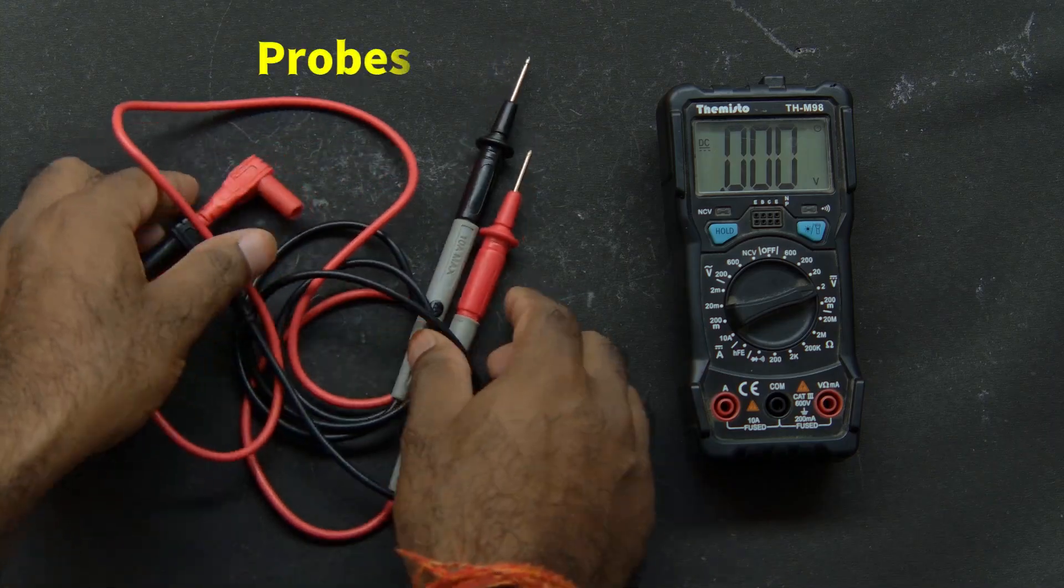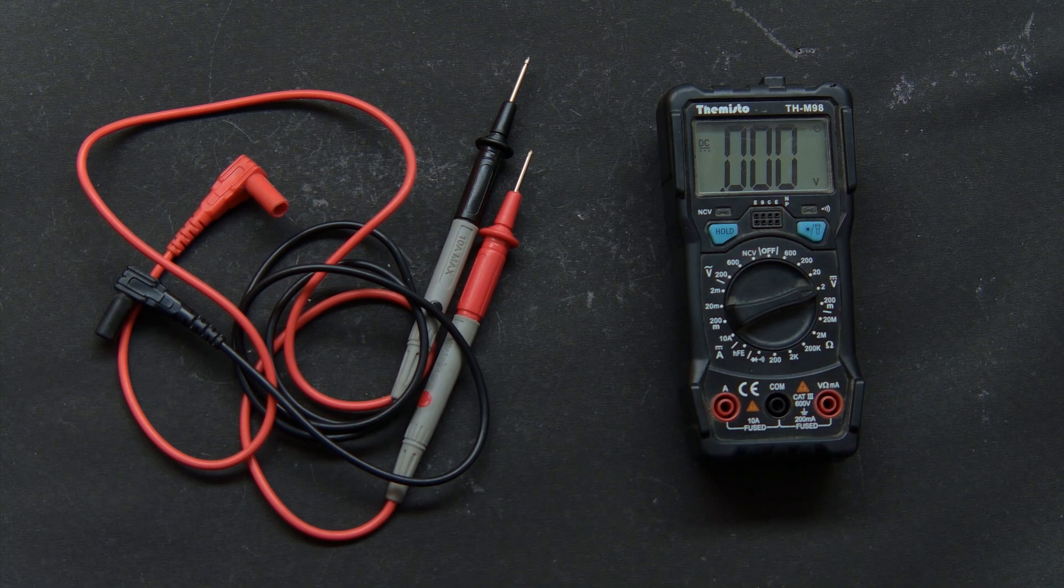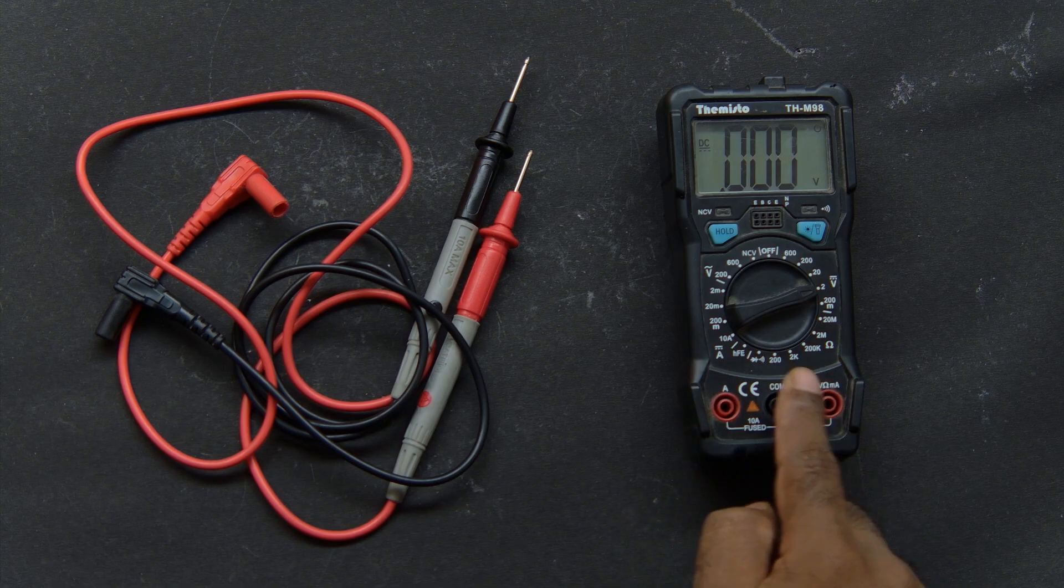Then we have the probes, one red and one black. These are the two wires you will use to connect the multimeter to the circuit. And finally, the ports at the bottom.